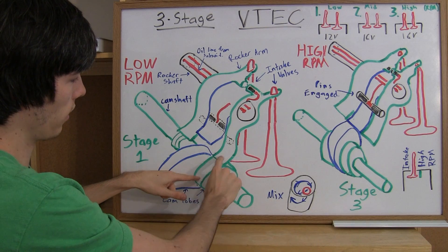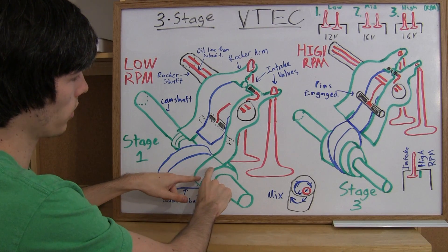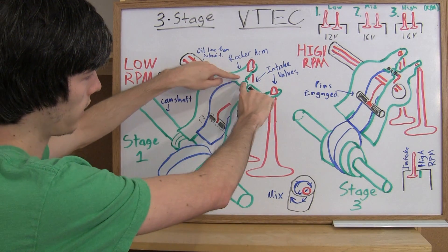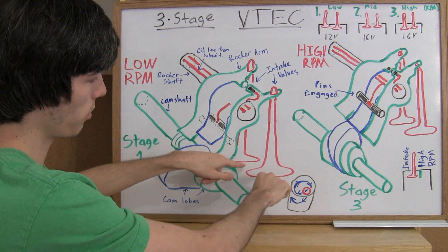So now, this cam lobe here is also going to be operating this other valve. So as that opens up and pushes these valves down, since they're locked together, will push both valves down.